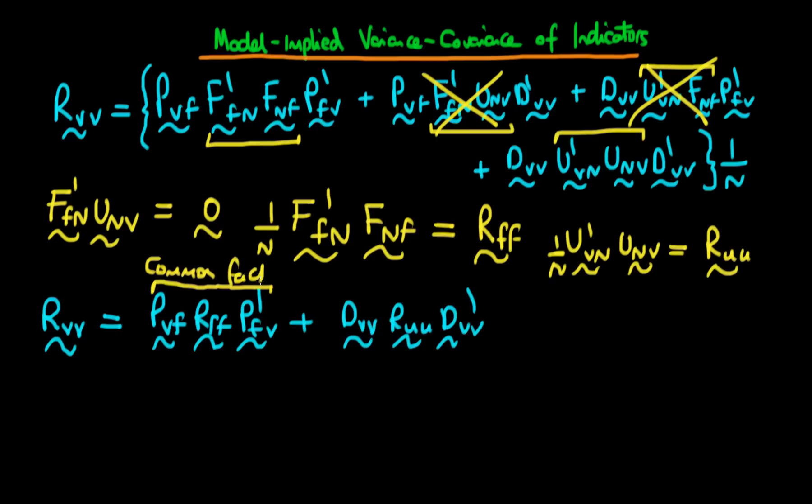Whereas this second expression here, which is all about the unique variances, is that variance which is due to the unique factors. So this really is exactly the same thing as our expression we derived before, which is lambda where lambda represented our weighting matrix. Here we've represented it by P times phi, where phi is our variance covariance matrix for our factors, times lambda primed plus finally theta, where theta is our variance covariance matrix for our errors.